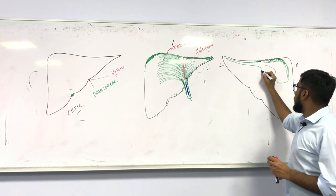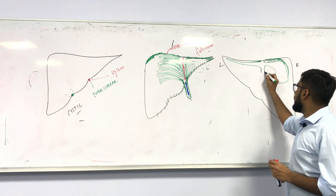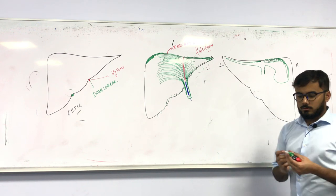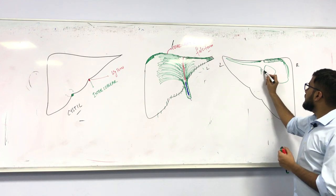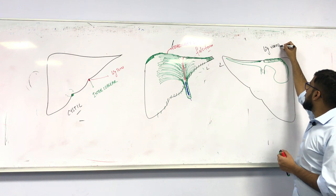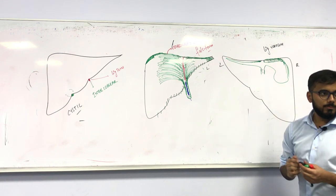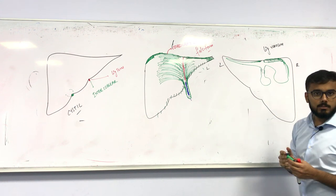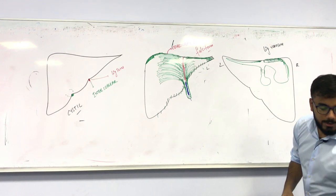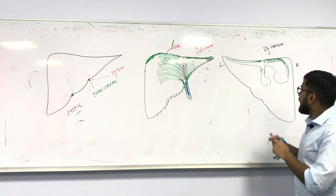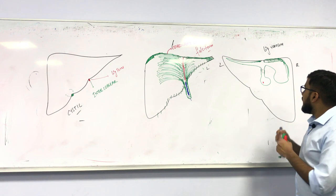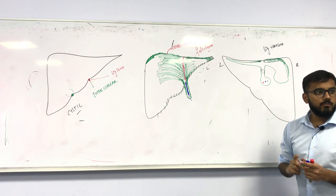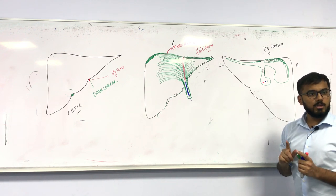On the posterior surface, there is a special ligament in the center called ligamentum venosum. Continuing below the ligamentum venosum is a very important structure called porta hepatis. The porta hepatis contains the hepatic artery, the portal vein, and the bile duct.